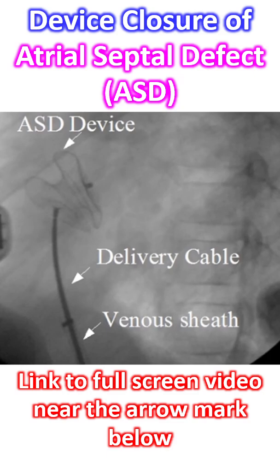When the position is judged ideal, the right atrial disc is allowed to form by withdrawal of the sheath. Once the two discs are in position with the waist across the ASD, slight wiggling is done to make sure that the device is perfectly fitting and has no tendency for dislodgement.